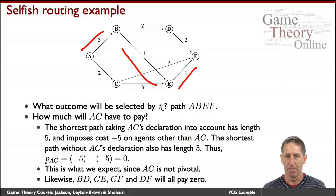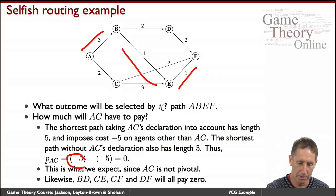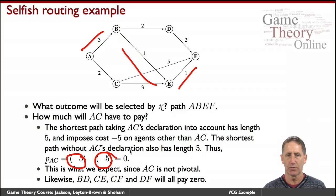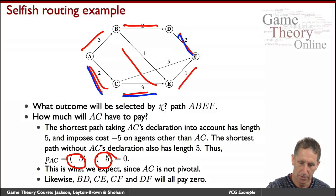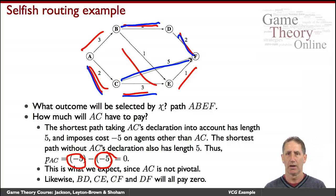And so the amount that AC pays is the difference between the cost to agents with him in the picture and without him in the picture, which of course is zero. This is what we expect, since AC is not pivotal. Likewise, all these edges not participating in the shortest path will neither pay nor receive anything according to VCG. So that's the easy part.